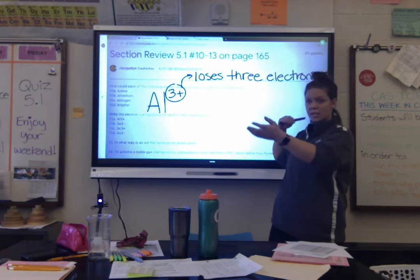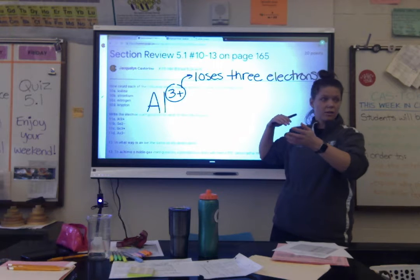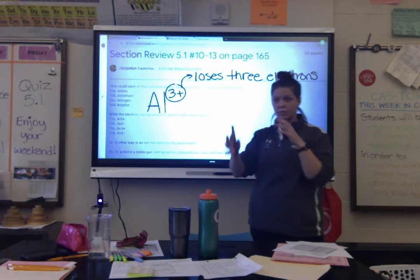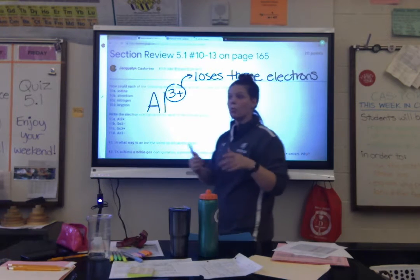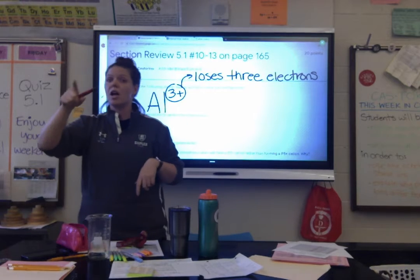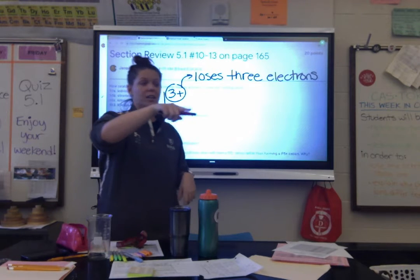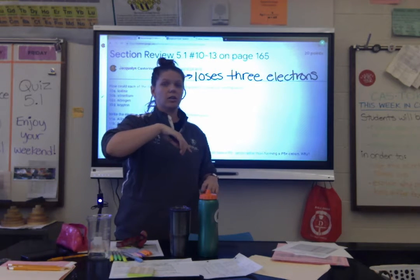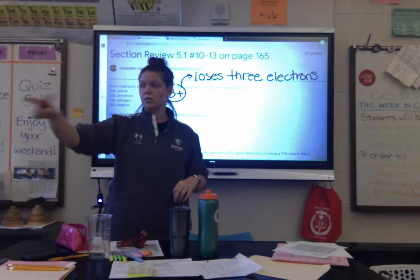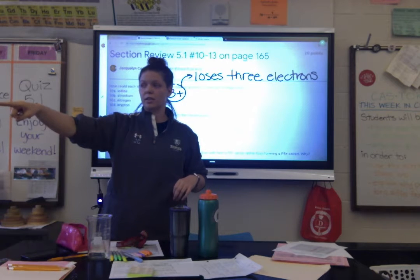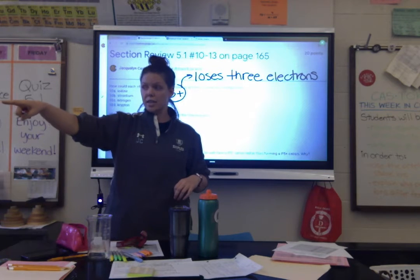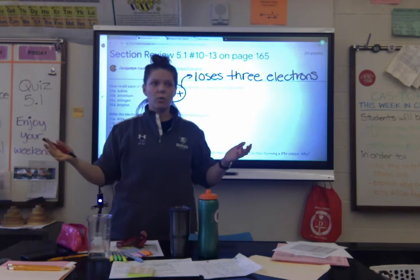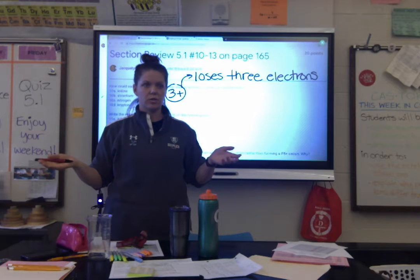For 11B, we have Se²⁻. Find selenium on the periodic table. Its atomic number is 34. Just like we figured out what 3 positive meant, what does 2 negative mean? Look at what we wrote for 3 positive and figure out what 2 negative means for electrons.